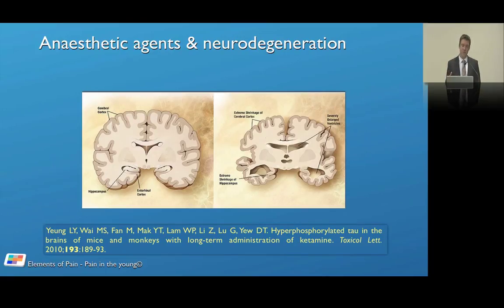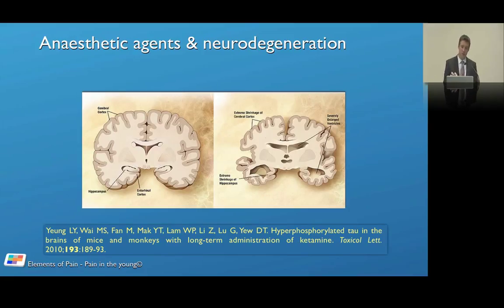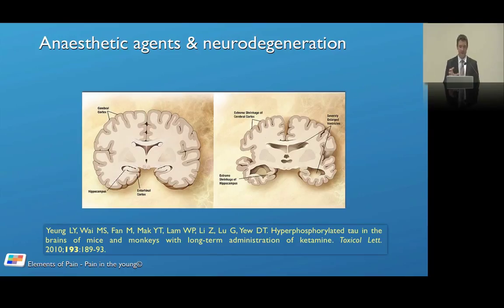There appear to be Alzheimer's-like changes: brain changes with long-term administration of ketamine show similar neurodegenerative changes. This is again in mice and monkeys — preclinical studies — however there are studies supporting some serious changes. A good article is 'Use of Anesthetic Agents in Neonates and Young Children' by Mellon and colleagues from 2007 — recommended reading, and I believe it's open access. We need to bear in mind the potential ramifications, even while the evidence in humans remains uncertain.